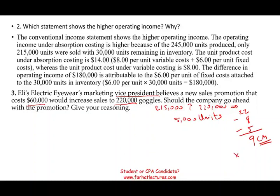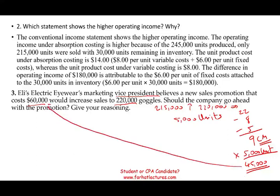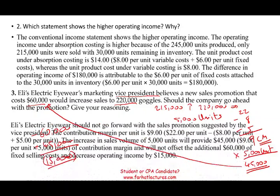Taking $9 contribution margin times 5,000 additional units gives $45,000 in additional contribution margin. Comparing this to the promotion cost of $60,000: negative $60,000 plus $45,000 means a net loss of $15,000. From an accounting perspective, it is not worth it. There may be other reasons — brand awareness, for example — but strictly from a numbers perspective, we will not undertake this promotion.